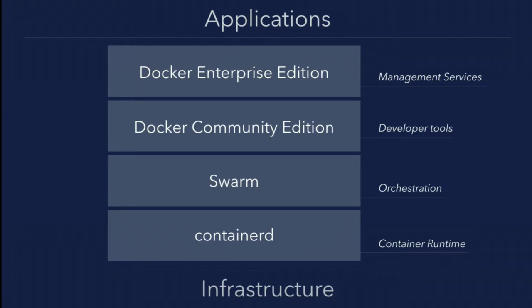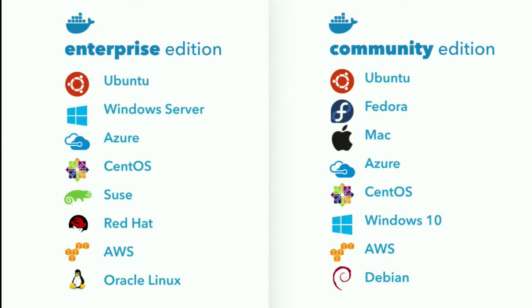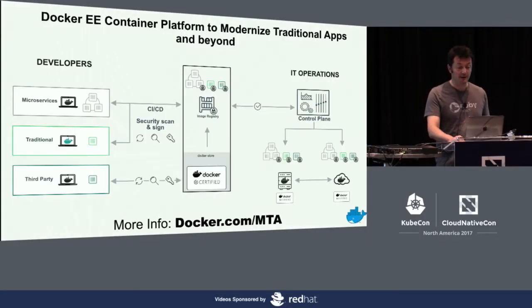On top of Swarm, you have Docker Community Edition, which is the developer tools — the tool you use to do Docker build, Docker push, to build your images and run them. And then on top of it, we're building Docker Enterprise Edition, which is a full-blown platform for enterprises to run and manage containers. The Community Edition you can find on Mac and Windows for development, while the Enterprise Edition runs on any type of infrastructure enterprises typically use.